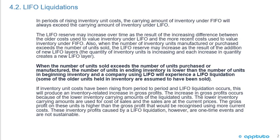When the number of units sold exceeds the number of units purchased or manufactured, the number of units in ending inventory is lower than in beginning inventory, and a company using LIFO will experience a LIFO liquidation. Some of the older units held in inventory are assumed to have been sold. If inventory costs have been rising and LIFO liquidation occurs, this produces an inventory-related increase in gross profits, because of the lower inventory carrying amounts of the liquidated units.